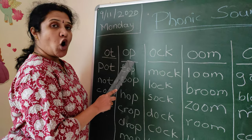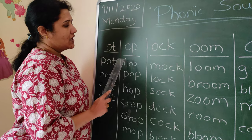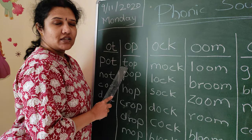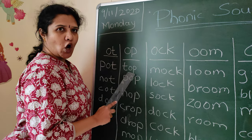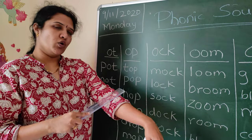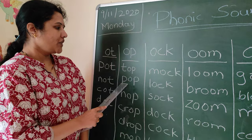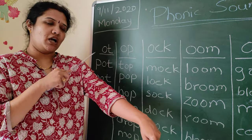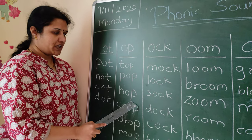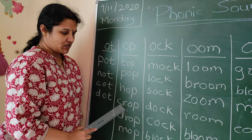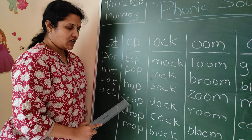Now let's look at the second sound: OP. O-P — OP sound. T-O-P. P-O-P. H-O-P. What is the sound of C-R? CR plus O — CROP.